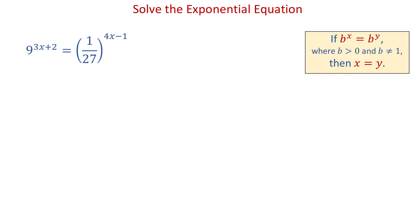If in this equation we can write both sides as a power of the same base, then we can use the following property: if b to the x power equals b to the y power, and b is positive and not equal to 1, then x equals y. This property is called the one-to-one property, and it tells us that if the base is the same on both sides of an equation, then the exponents will be equal.